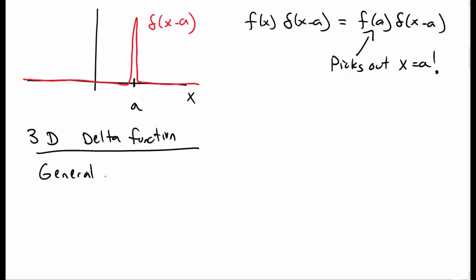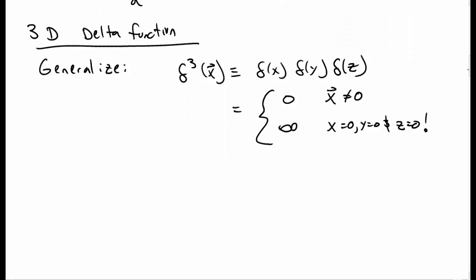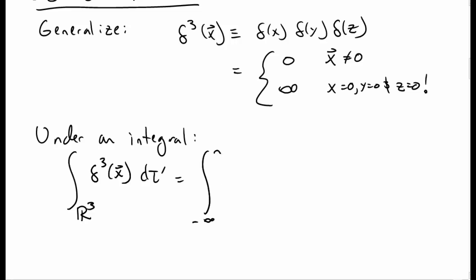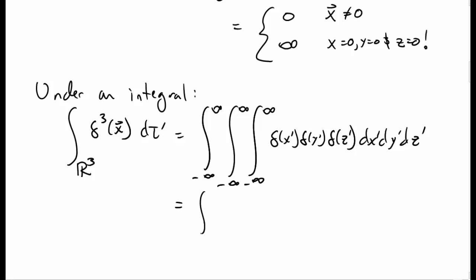We can consider a three-dimensional delta function. For a 3D delta function, we define delta-3 of x as delta of x times delta of y times delta of z. This is 0 whenever any of the coordinates is not equal to 0, and infinity when each coordinate is identically equal to 0. The integral of the three-dimensional delta function over all space — meaning a triple integral over x, y, and z from negative infinity to infinity of delta(x') delta(y') delta(z') dx' dy' dz' — separates into three integrals, each equal to 1, giving 1 times 1 times 1 equals 1.